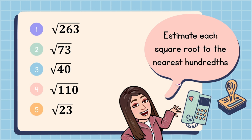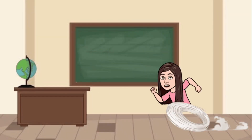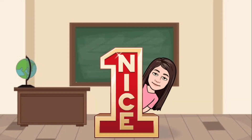Congratulations, Grade 7 learners! Now try answering the following practice questions. You may ask your math teacher to check your answers. Estimate each square root to the nearest hundredths: number 1: square root of 263, number 2: square root of 73, number 3: square root of 40, number 4: square root of 110, and number 5: square root of 23. That ends our lesson today — see you on our next mathenic episode, keep safe!